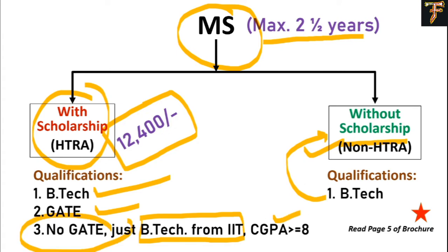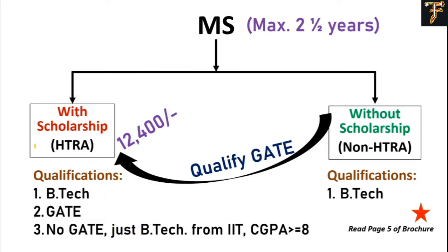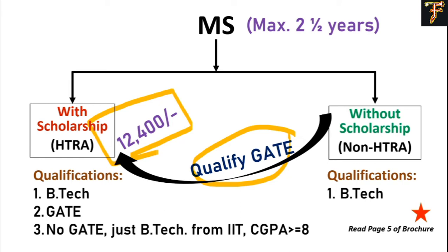Even if you are a non-HTRA student but want to become eligible for HTRA, you still have an option. For example, if you join IIT Madras in July, then in July of the next year qualify GATE, submit your documents to the department, and you become eligible for the scholarship. So even without GATE right now, join IIT Madras, prepare again for GATE, qualify it, and you are eligible for the scholarship.